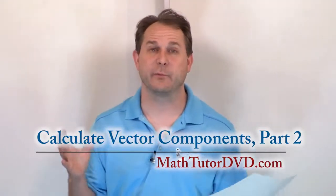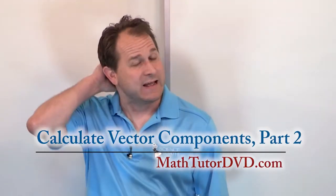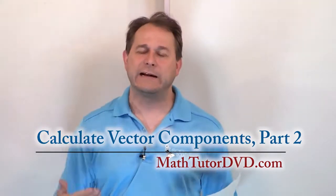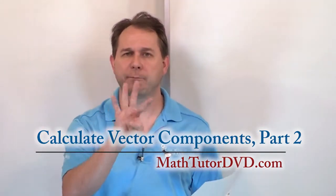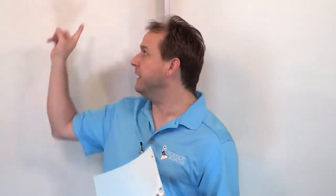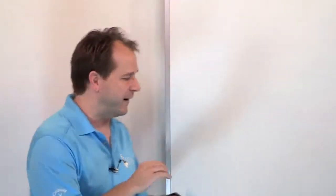This is part two of the set of problems where we're learning how to calculate vector components. I think one of the best ways to get a lot of practice with this is let's go ahead and solve four problems in this section. They're all really short. What I want to do is decompose a vector in each of the four quadrants of the plane. So each of the four quadrants we'll do four different vectors, one pointing in each of the different directions so that you can see what the different components look like when the vector is pointed in different directions.